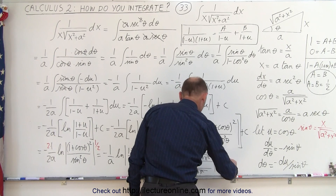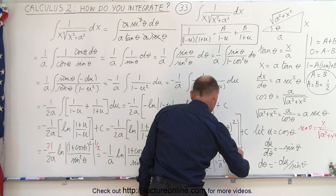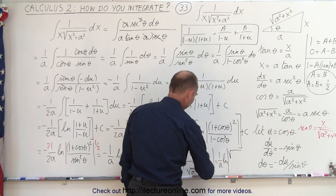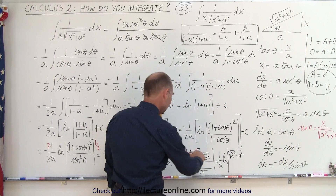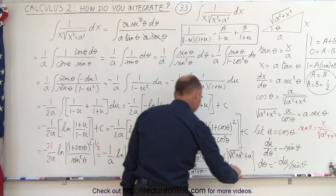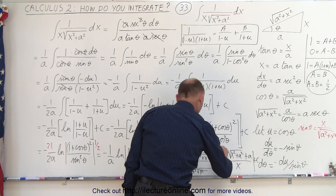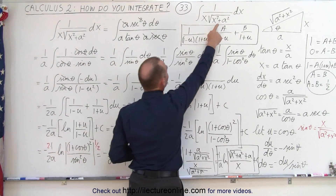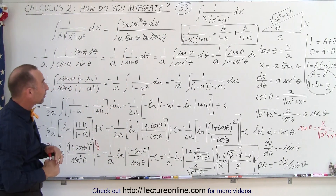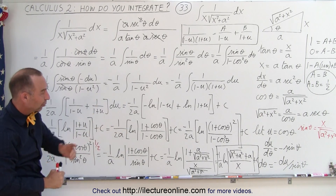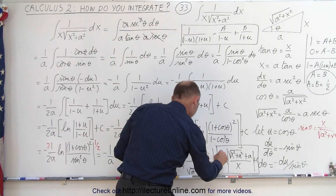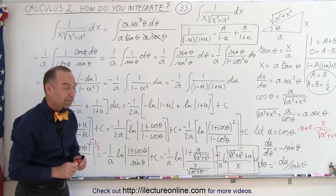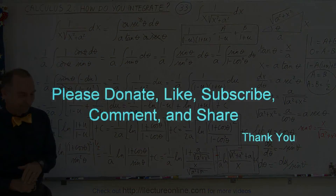We end up with minus 1 over a times the natural log of (√(x²+a²) plus a) divided by x, plus a constant of integration. So notice when we change the negative to a positive, it becomes a much more drawn-out process to find the integral of 1 over x times √(x²+a²). Don't forget the negative: the final result is negative 1 over a times the natural log of (√(x²+a²) plus a) over x, plus C. And that is the result we were looking for. Thank you.